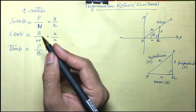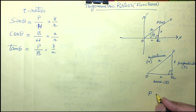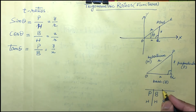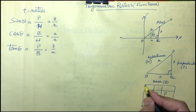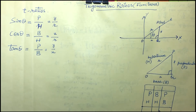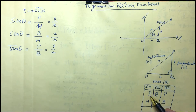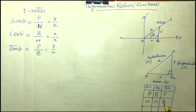To remember these formulas we use a small trick: write 'Physics, Biology, Physics, History, History, Biology.' The first column is sin, second is cos, third is tan. So sin theta is perpendicular upon hypotenuse, cos theta is base upon hypotenuse, and tan theta is perpendicular upon base, y upon x.